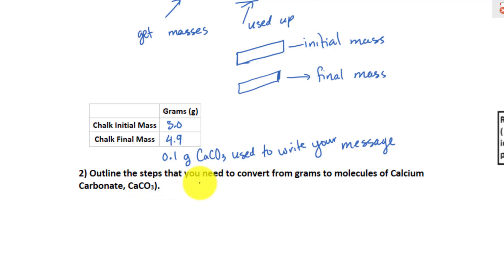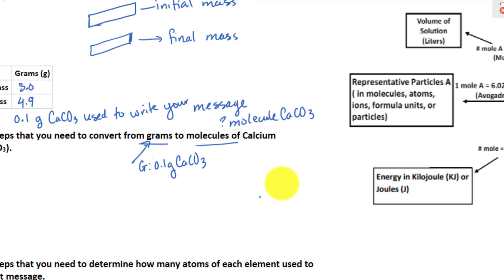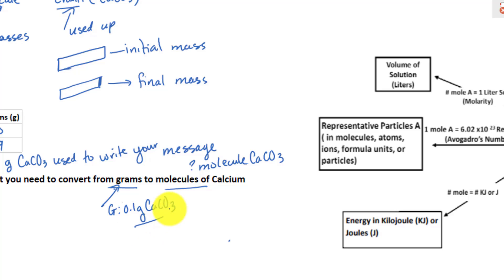Outline the step that you would need to convert from grams to molecules of calcium carbonate. Basically, all it is saying is if you know how many grams of calcium carbonate are used to write your message, can you convert to molecules? In this case, it's just a basic stoichiometry problem where you are given 0.1 grams of calcium carbonate, and we are looking for question mark molecules of calcium carbonate. If we look back at the stoichiometry flowchart, where do we always start? From your given. This is where you start, and where do you end? At the molecules of A, calcium carbonate, because the chemical hasn't changed.